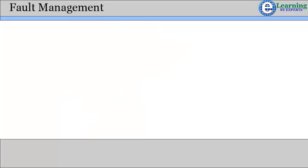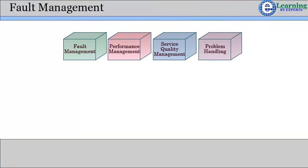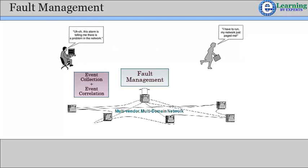Various aspects of a service assurance system are: fault management, performance management, service quality management, and problem handling. The fault management system receives and gathers alerts from various sources and consolidates them into a single screen to be viewed by a user or operator.